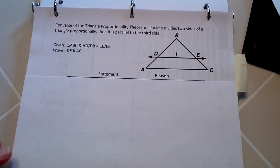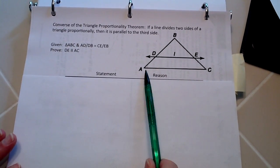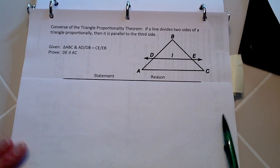And here's what the given, and this is what we're going to prove, that this line DE is parallel to AC.